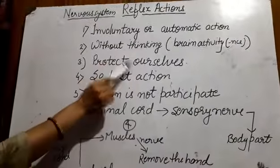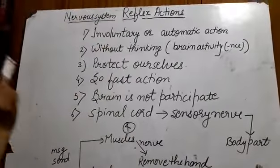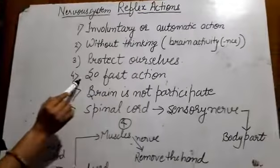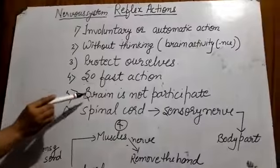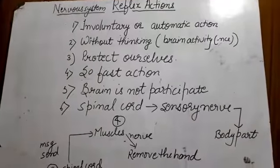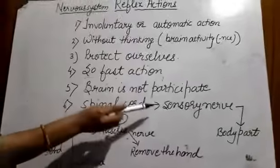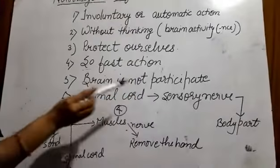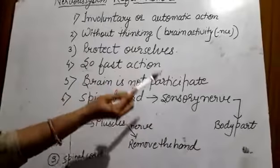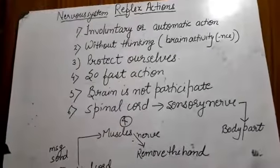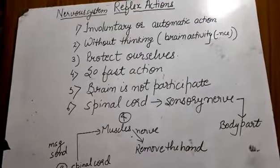This action helps to protect ourselves. This action is very fast and the brain does not participate in it. What is involved? It involves the spinal cord and sensory nerve. The sensory nerve connects to body parts, and the action happens automatically.